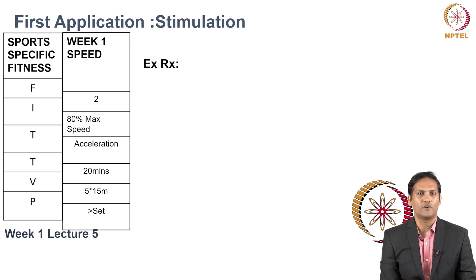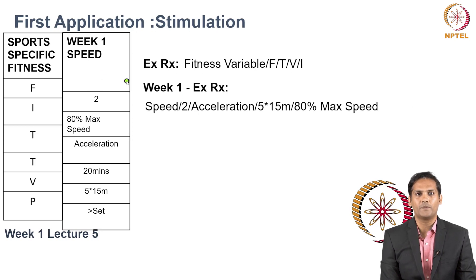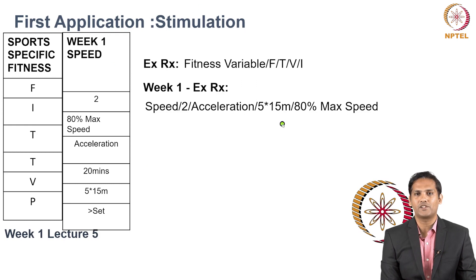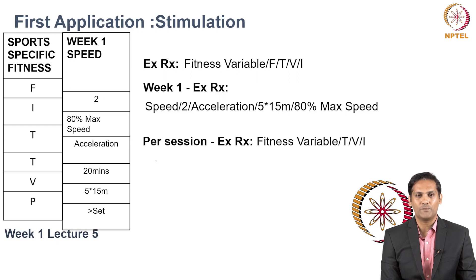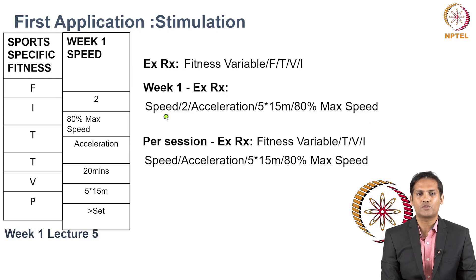For the speed session weekly prescription, the format is similar. The fitness variable is speed; frequency is two sessions per week; type of speed is acceleration; volume is sets by distance; and intensity is 80% of max speed. For a per-session prescription, frequency is excluded — you write the fitness variable, type of stimulation, volume, and intensity.